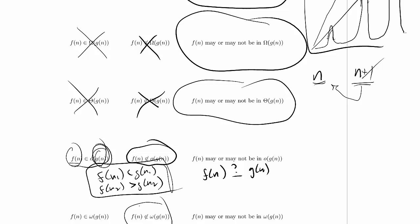Remember, little o and little omega, they are exactly symmetrical, just like big O and big omega are exactly symmetrical. So we know for our first three bounds, our big bounds, f could be big O, f could be big omega, f could be big theta, but it doesn't have to be any of those things.